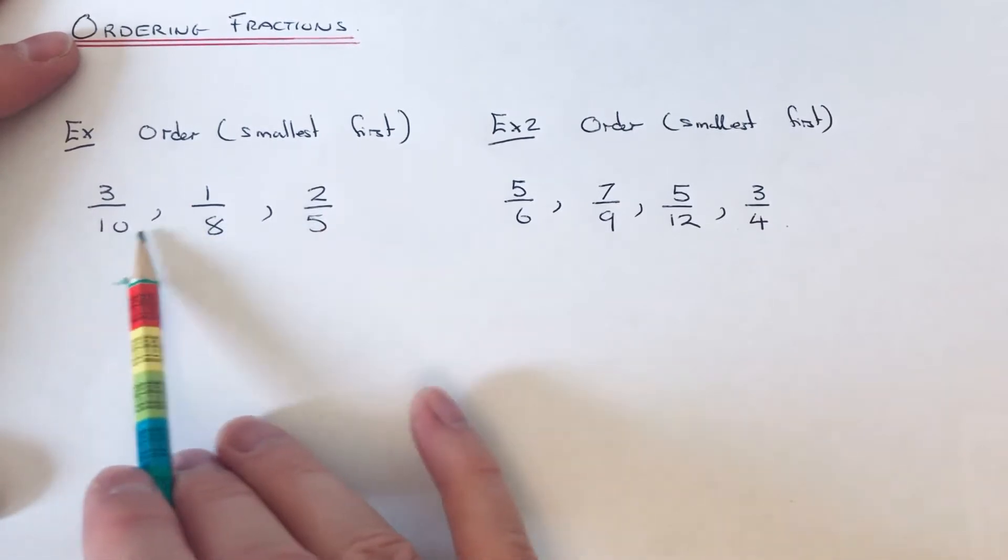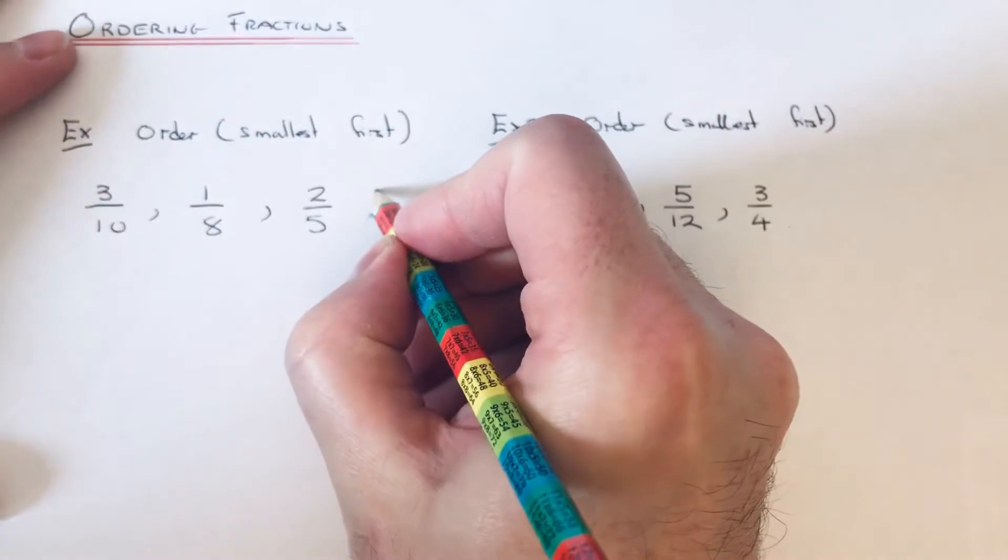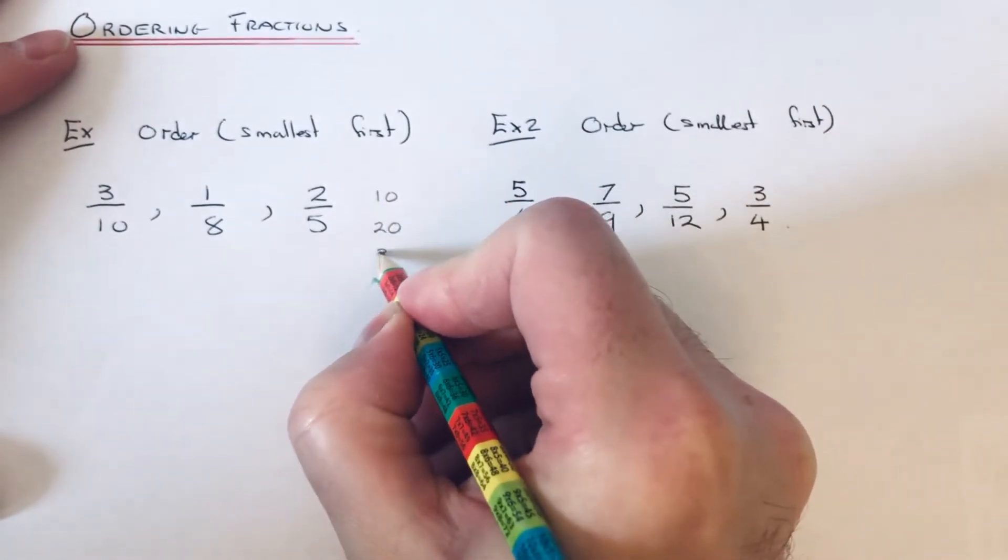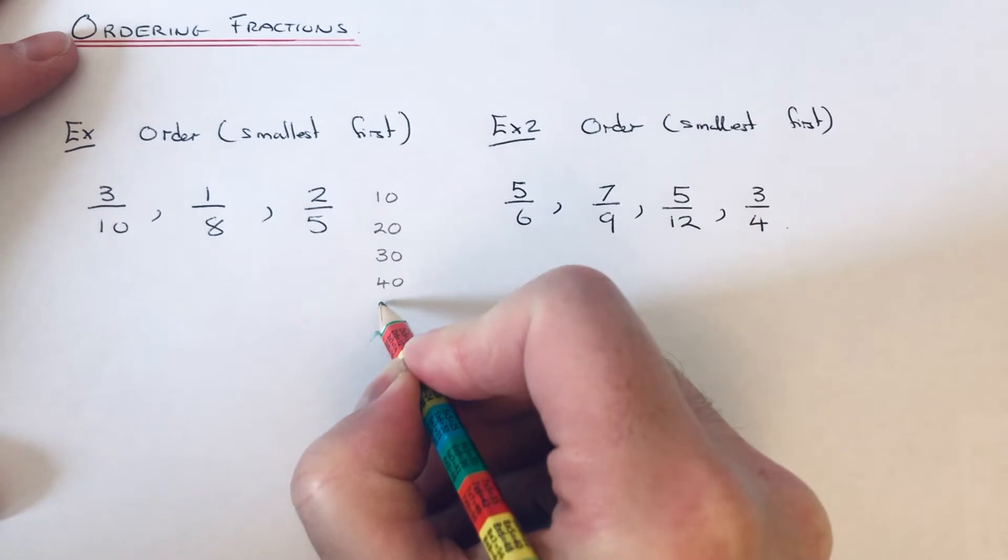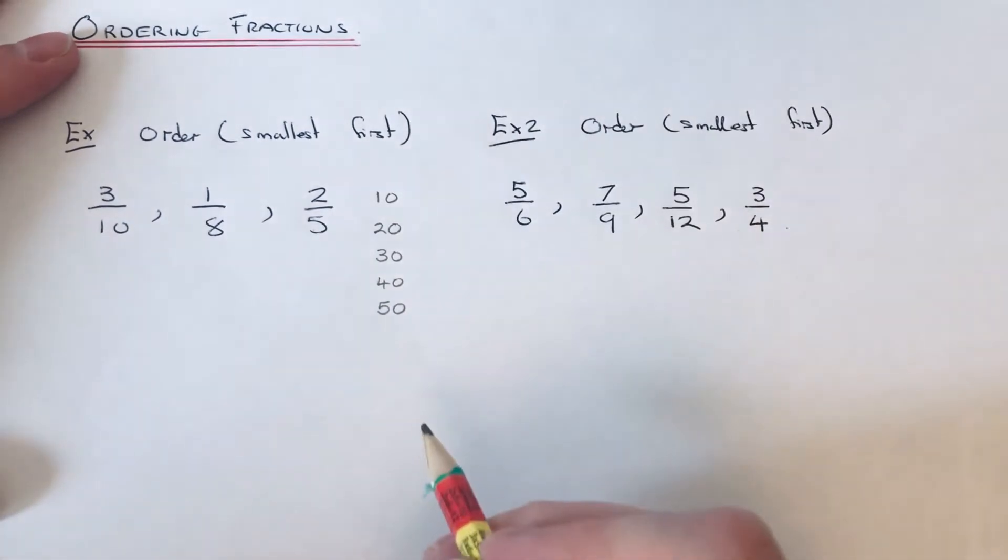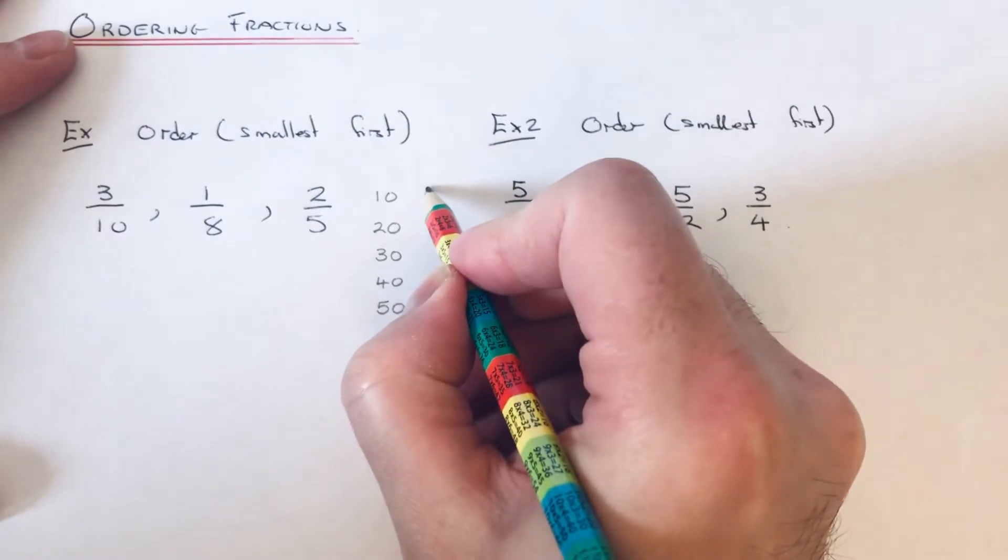I'm going to write down my multiples of 10. I'm just going to start off with 5, and if I need any more I can come back to them later. Let's do our multiples of 8 and let's do our multiples of 5. So far we haven't got a common multiple of our three numbers.